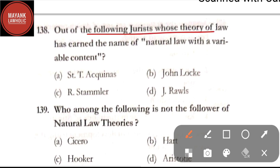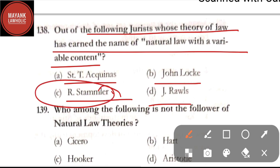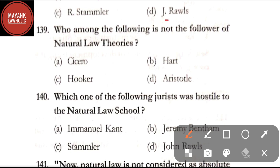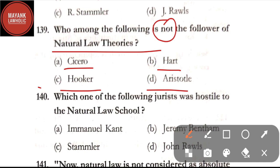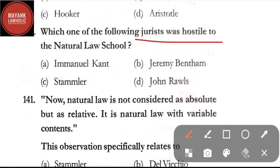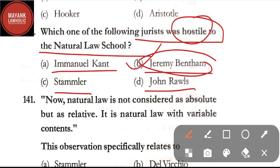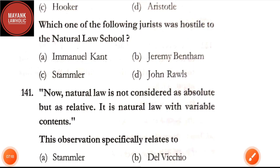Question number 138: out of the following jurists, whose theory of law has earned the name of 'natural law with variable content' — option A: Saint Thomas Aquinas; option B: John Locke; option C: R. Stammler; option D: J. Rawls. The correct answer is option C, R. Stammler. Question number 139: who among the following is not a follower of natural law theories — option A: Cicero; option B: Hart; option C: Hooker; option D: Aristotle. The correct answer is option C, Hooker. Wait — the correct answer is option B, Hart.